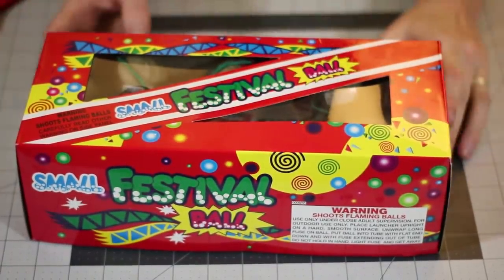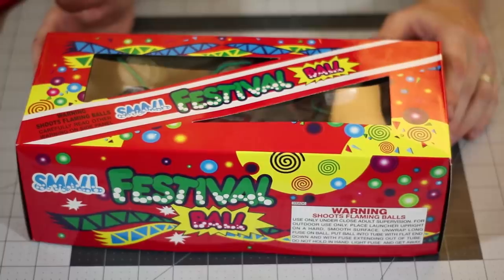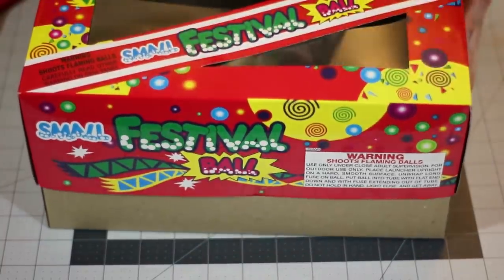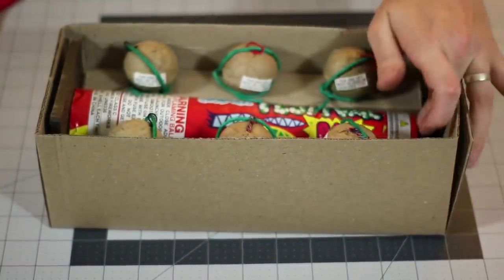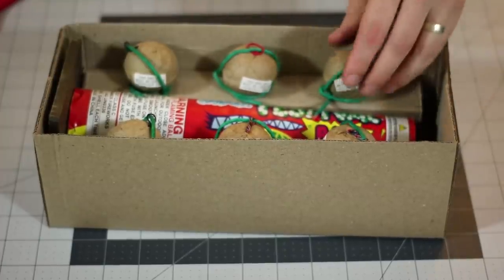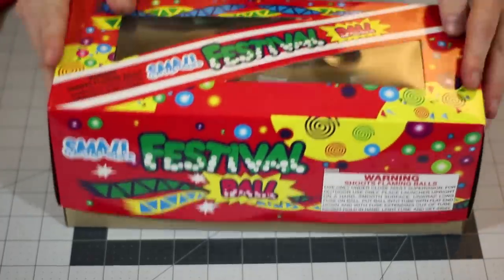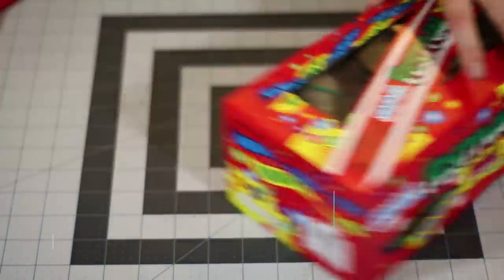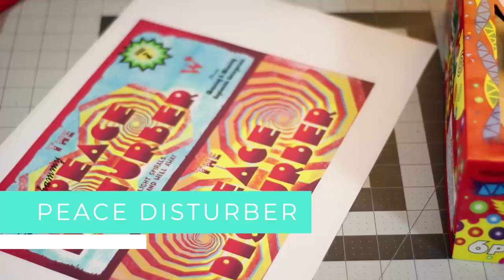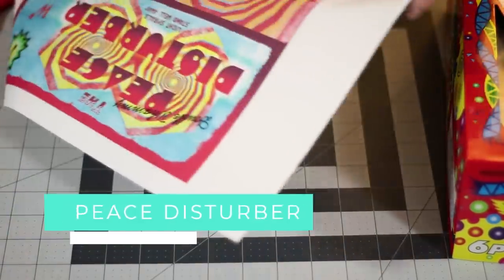And last but not least, we have the small festival ball, is what it's called. But it's actually artillery shells. So these are the kind that just shoot up and explode very loudly in the sky. We're going to be rebranding this as the Peace Disturber. So let's go ahead and cut these templates out.